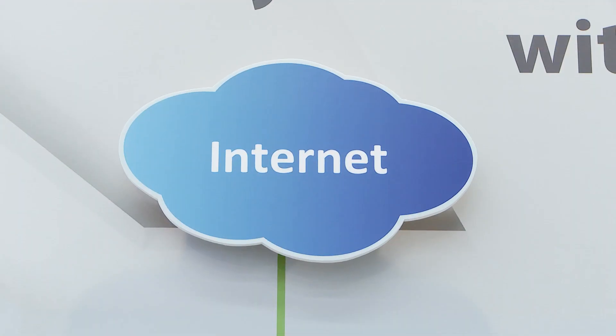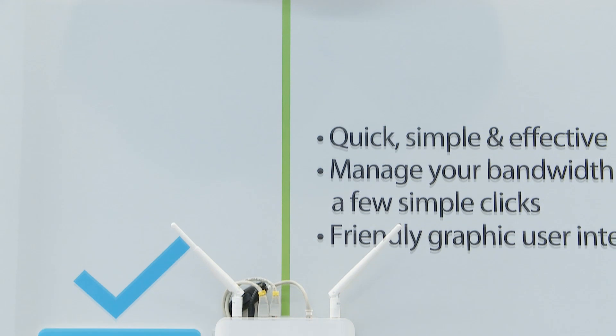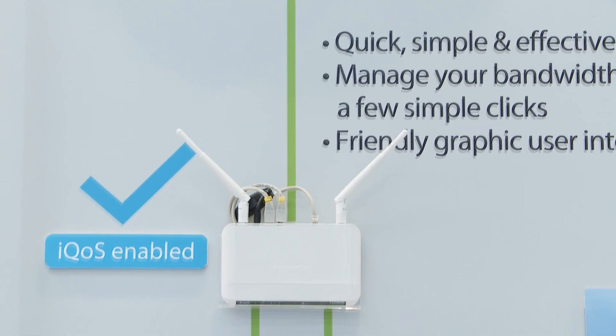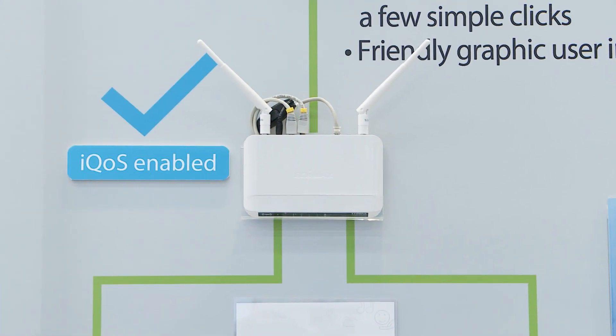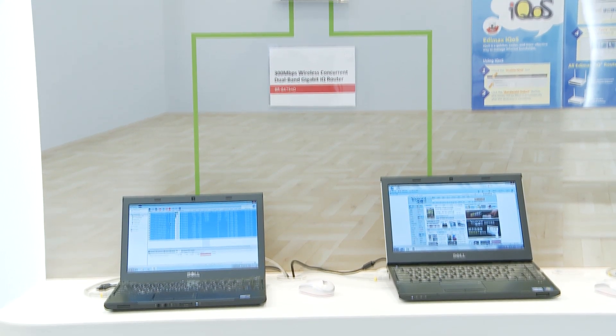So with IQOS, for instance, you have a home and you have four brothers, and one of your brothers is downloading stuff from the internet while you're playing games. Normally the problem is you all have slow connections and your game lags. But with IQOS, you have an easy way to manage your bandwidth, and when you're playing online games you won't have any more problems.